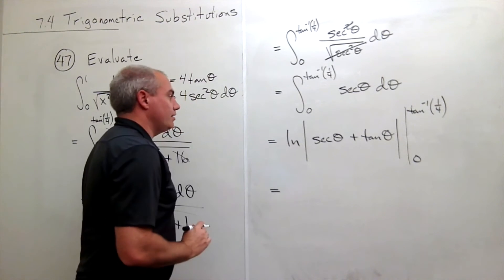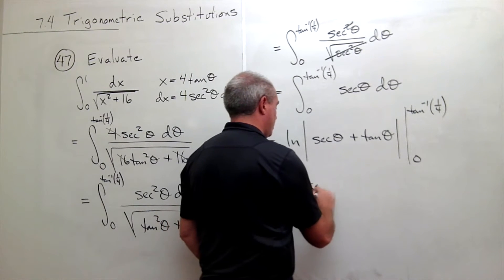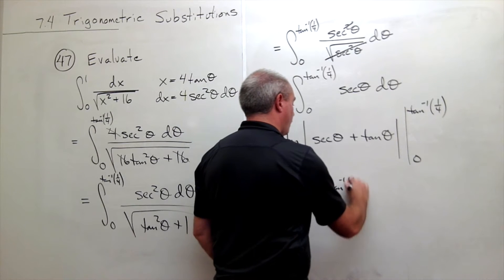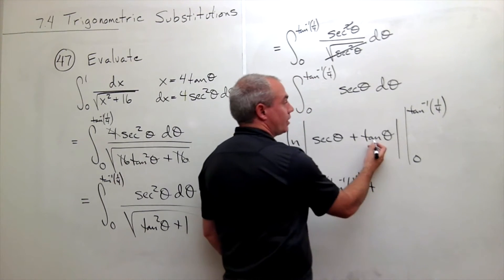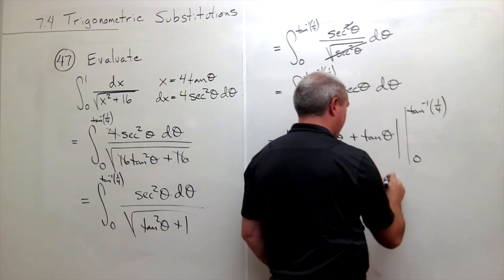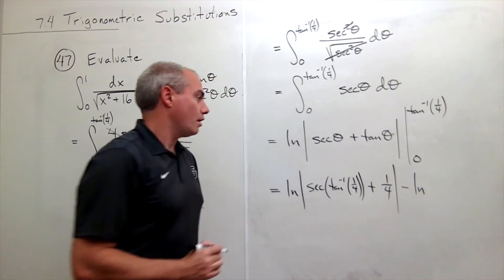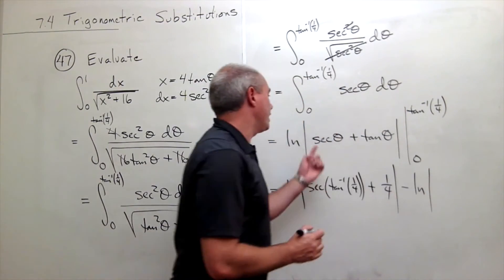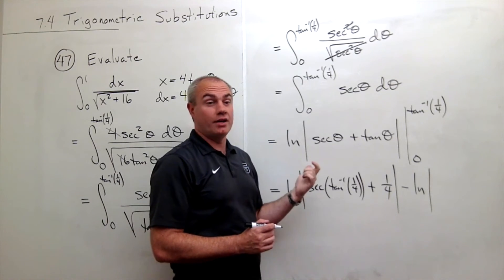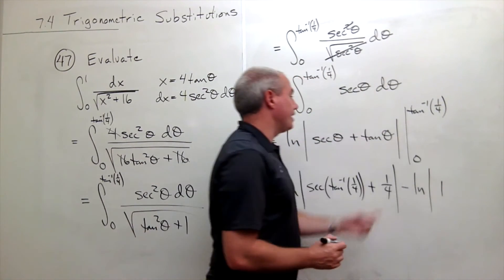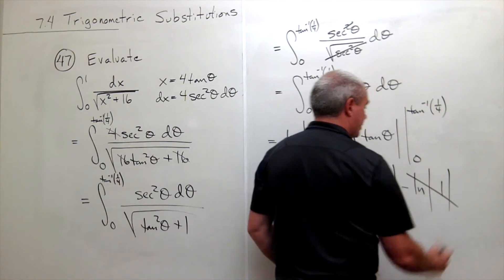So let's plug things in. We get ln of the absolute value of secant of tan inverse of 1 fourth plus tangent of tan inverse of 1 fourth. Well, tangent of tan inverse of something is 1 fourth minus ln of the absolute value, plug in 0, and I get secant of 0. Well, secant is the same as 1 over cosine of 0. Cosine of 0 is 1, so it's just 1. And then tangent of 0 is 0, so it's just ln of 1. And we all know that ln of 1 is 0, so that just goes away.